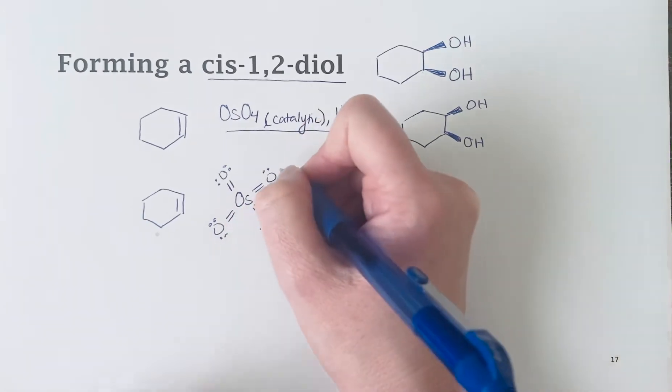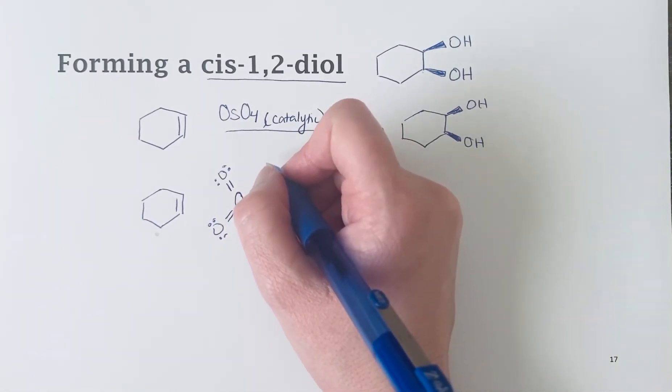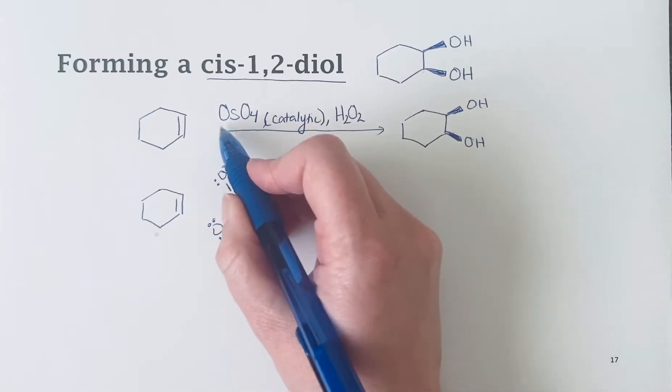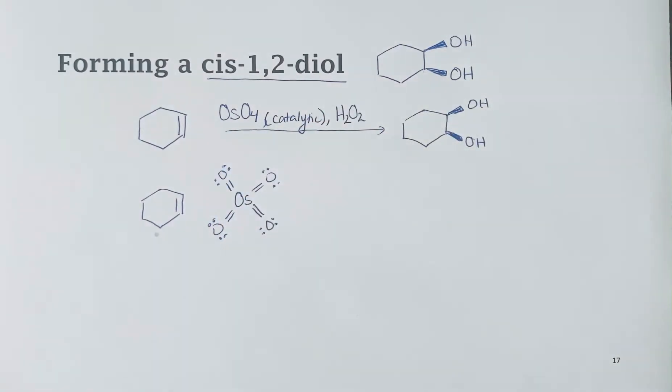You can see this with other metals. Another thing that you will see is potassium permanganate, and that manganese has four bonds to oxygen. So you would see KMnO4, and it does the same sort of reaction.